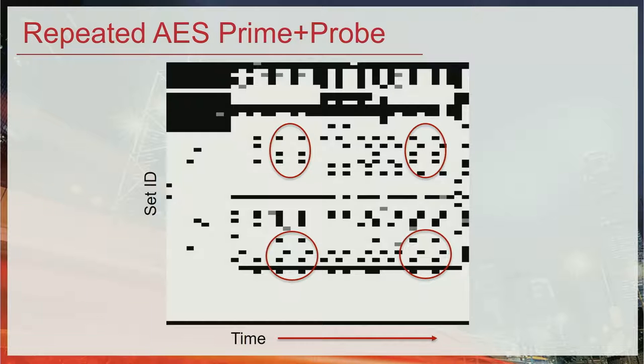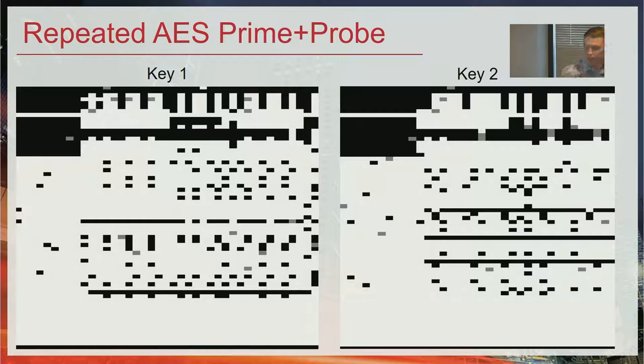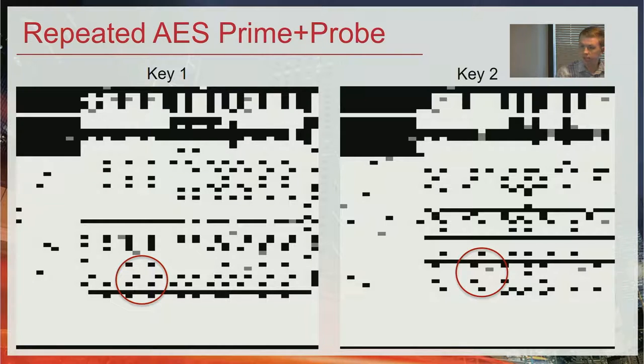If we do the same operation with two different keys — same code, same setup — the trace on the left is with one key and the trace on the right is with a different key. We can still see repetition on the right, but that repetition is different from the left. The only thing we changed is the key. So if there's some way to go from this difference in patterns to figuring out what the key bytes are, the cache attack succeeds and we get the secret information. And there are ways to do this with AES.